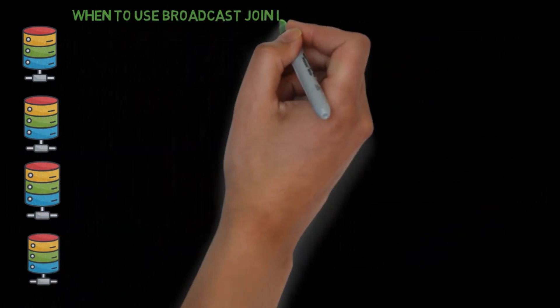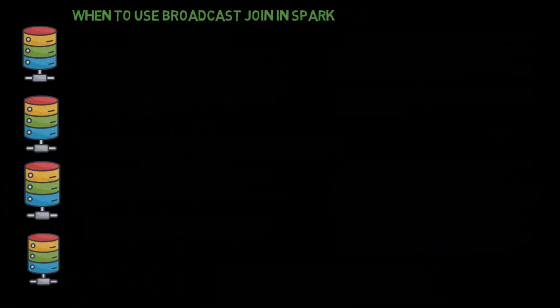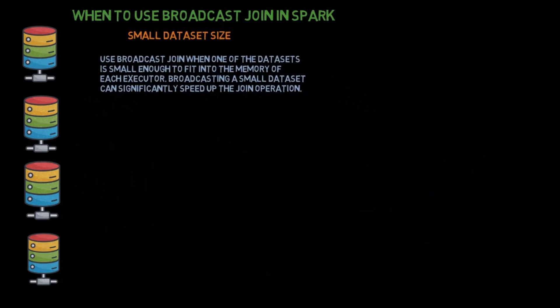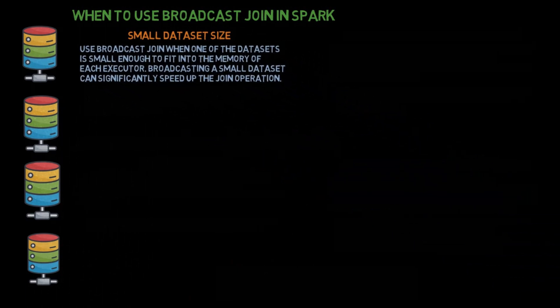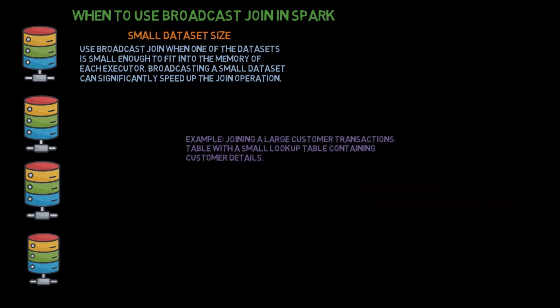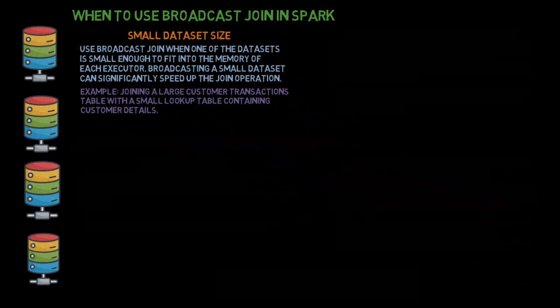When to use Broadcast Join in Spark. Small dataset size: Use Broadcast Join when one of the datasets is small enough to fit into the memory of each executor. Broadcasting a small dataset can significantly speed up the join operation. Example: Joining a large customer transactions table with a small lookup table containing customer details.